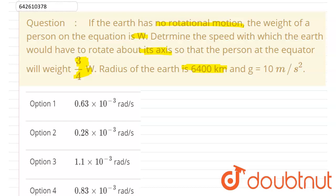So let us take the earth first. Let's suppose this is the earth. And when the earth wasn't rotating, in this question it is given that when the earth was not rotating